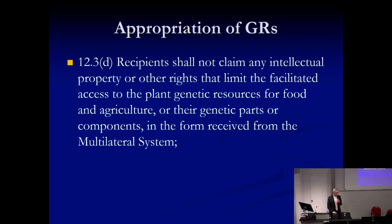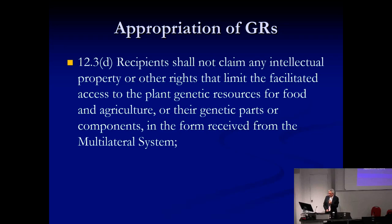This treaty contains a provision addressing appropriation: recipients shall not claim any intellectual property or other rights that limit the facilitated access to plant genetic resources for agriculture or their genetic parts or components received from the multilateral system. This is a clause against appropriation through patents. The concept is a global pool with free access, and benefits shared globally — because of the need for a global pool for food security. This model seems most adequate for the situation of marine genetic resources beyond national jurisdiction.